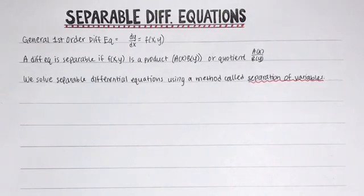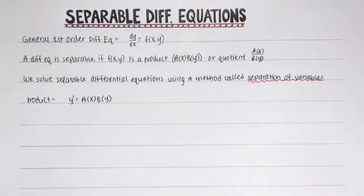The method we use to solve separable differential equations is called separation of variables. Here's the basic idea. Let's say we have the product of functions, so a of x times b of y. The name of the method basically describes what we're going to do. We're just separating the variables. We want the function of x on one side and the function of y on the other side of the equation.